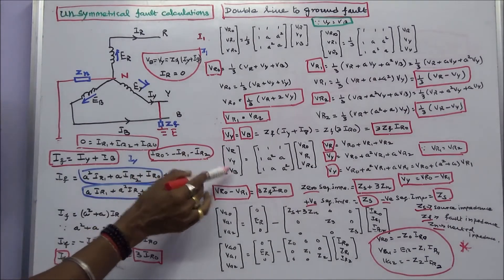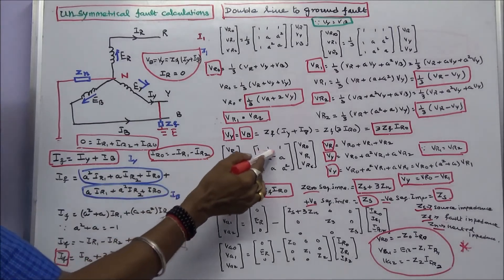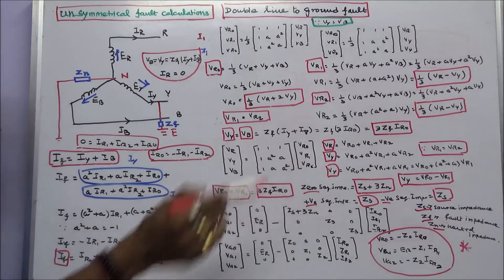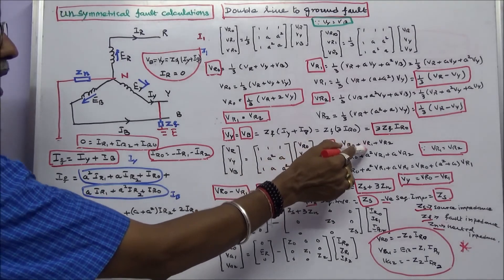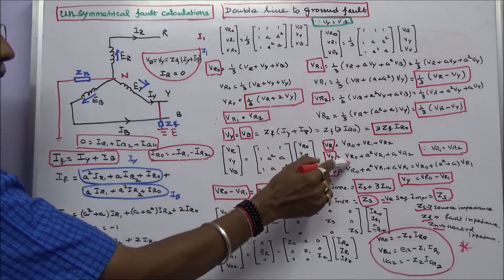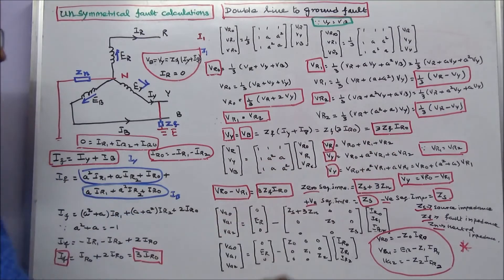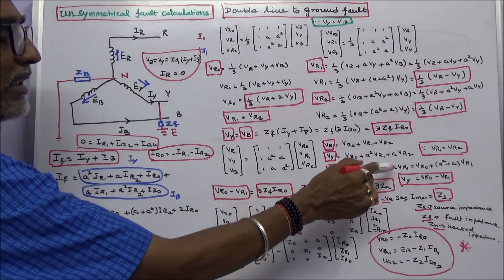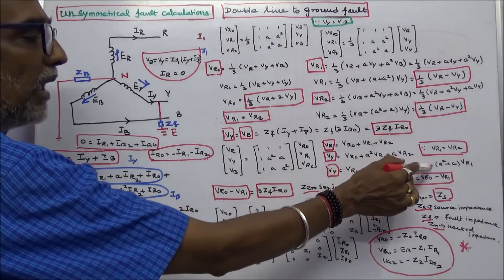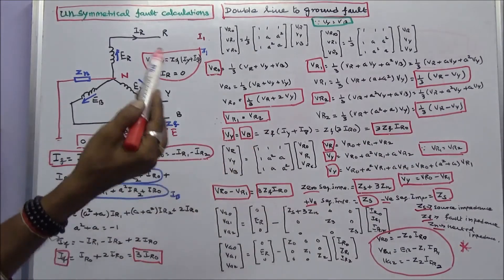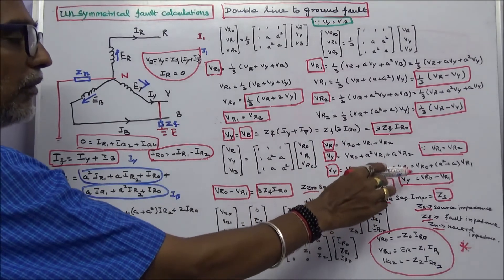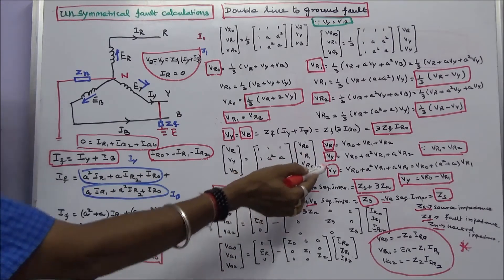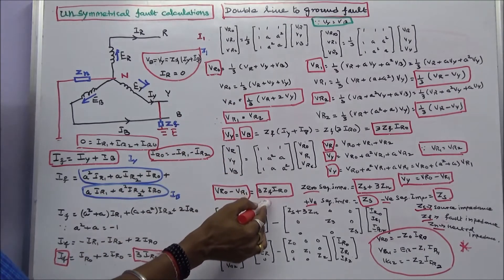Writing VR, VY, VB in matrix form: VR equals VR0 plus VR1 plus VR2. Since VR1 equals VR2, we derive that VR0 minus VR1 equals VY, which equals 3 into Zf into IR0.